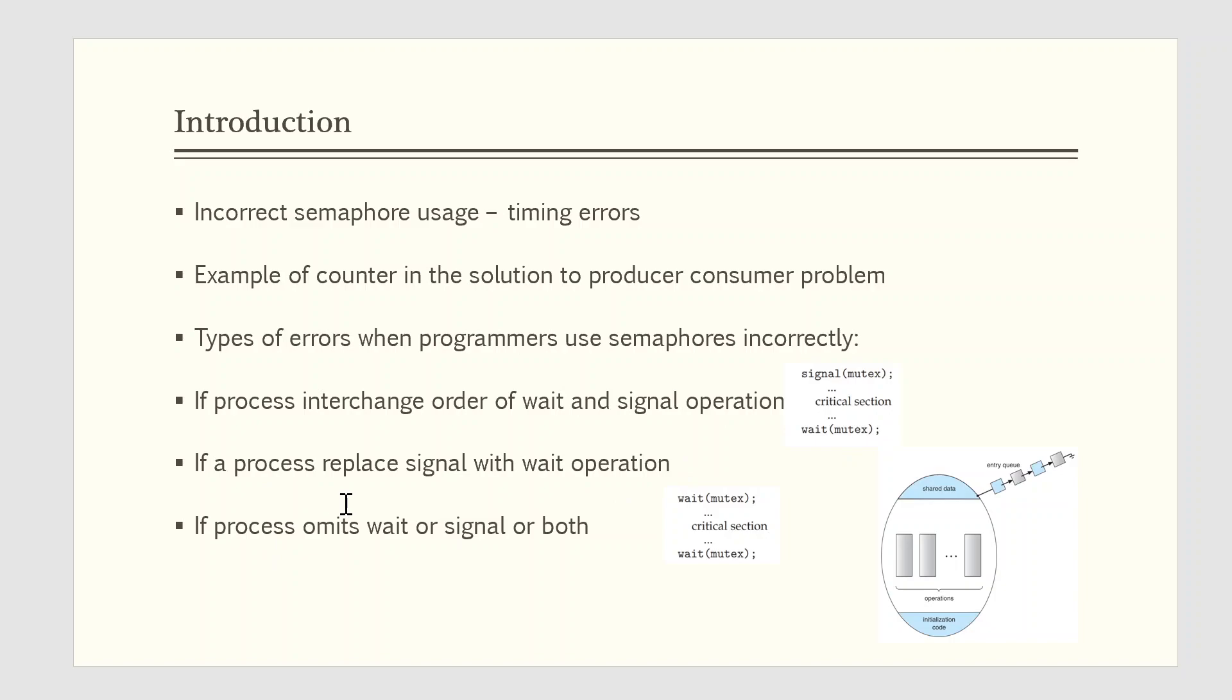Suppose that a process replaces signal of mutex with wait of mutex. That is, it executes wait of mutex followed by the critical section followed by wait of mutex again. In this case, a deadlock will occur.